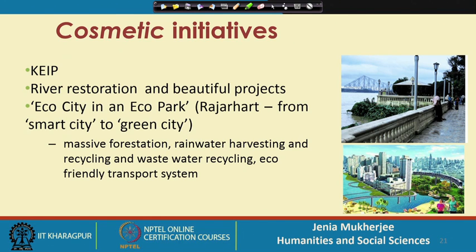There are interesting developments: the KIP (Kolkata Environment Improvement Project) and other river restoration schemes and beautification projects are ongoing. Rajarhat has been designated a green city — previously it was said Rajarhat would become a smart city, but the state government came up with its own plan. But it is a pity to think that though massive forestation, rainwater harvesting, recycling, and waste water recycling schemes are being planned for this newly made Rajarhat, one has to keep in mind that Rajarhat came up on huge acres and hectares of wetlands.